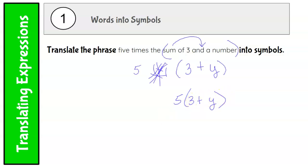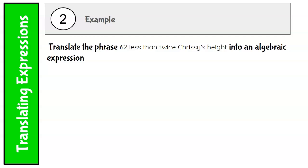Let's look at two more examples very quickly. Translate the phrase "62 less than twice Chrissy's height." Okay, it doesn't say "is less than," so this is minus. And there's that word than, which means I'm going to switch the order of these two things. So Chrissy's height is going to go first. I'm going to put C for Chrissy. Twice Chrissy's height, so that means two times Chrissy's height.